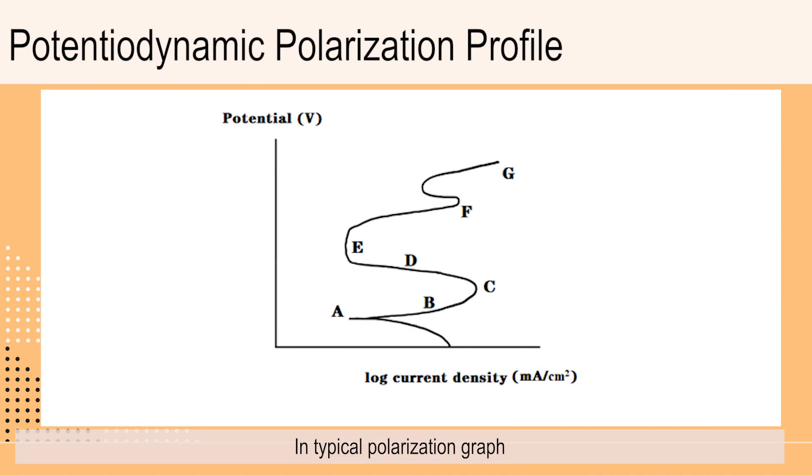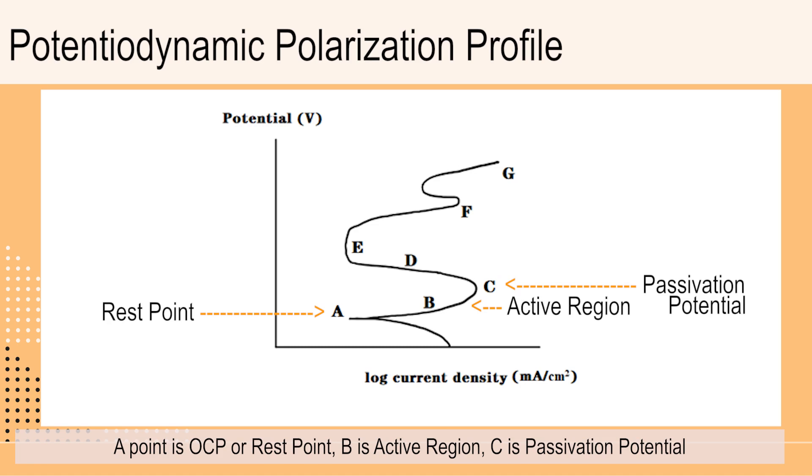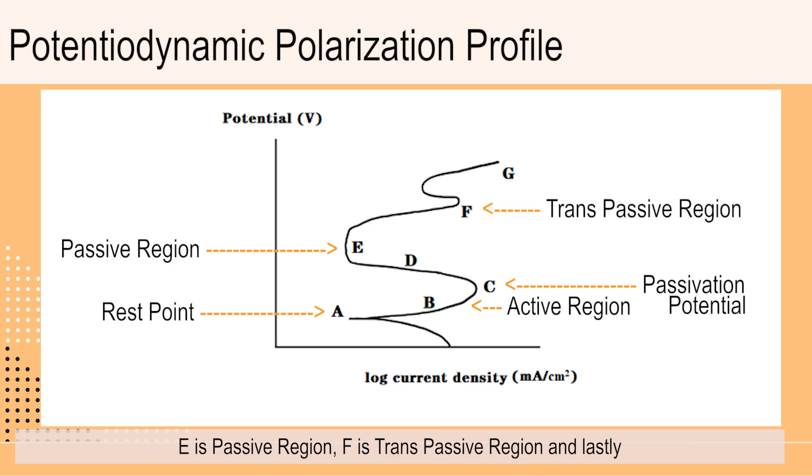In typical polarization graph, point A is OCP or rest point, B is active region, C is passivation potential, E is passive region, F is trans-passive region, and lastly G is secondary passivity.